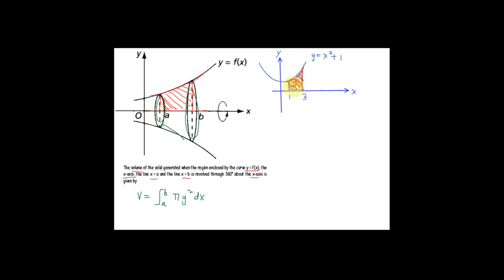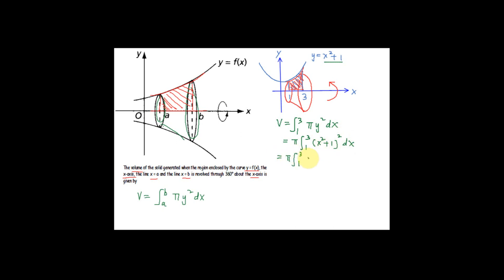Let's do this example: find the volume where the region is bounded by the curve y = x² + 1, x = 1, x = 3, and the x-axis, revolved 360 degrees about the x-axis. You will see a solid after it turns 360 degrees. Using the formula, volume = ∫ from 1 to 3 of π y² dx. Since we have dx, we must express y² in terms of x. So we have π ∫ from 1 to 3 of (x² + 1)² dx.